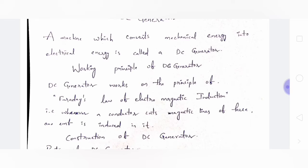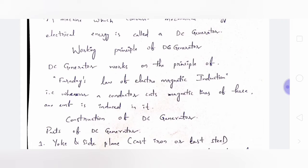The working principle of DC generator is based on Faraday's law of electromagnetic induction. Whenever a conductor cuts the magnetic lines of force, an EMF is induced in it. By rotating the conductor, we cut the magnetic lines of force and an EMF is induced. When the conductor is connected to a circuit, current will flow in the circuit.